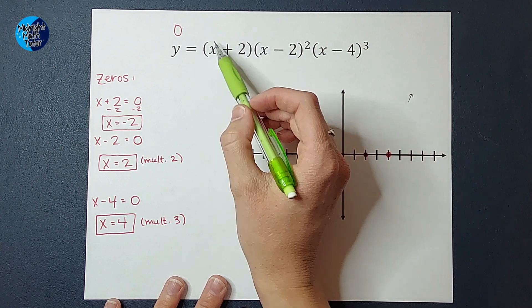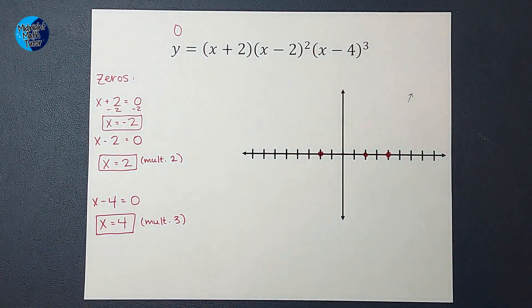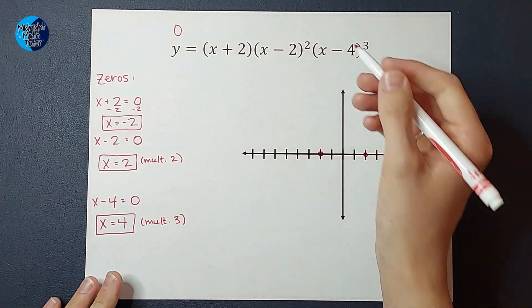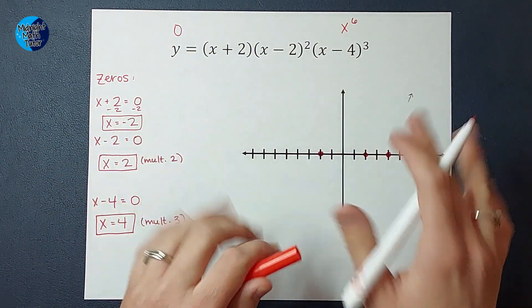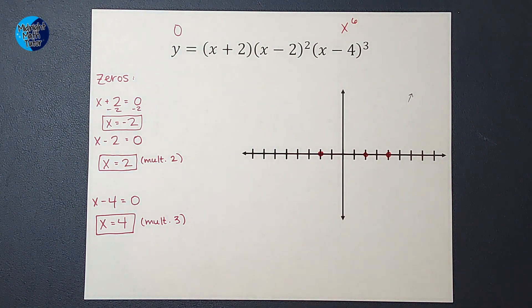So I would end up with x to the sixth once I had this all multiplied out. So my degree, my highest exponent is 6. So I just need to look at if it's even or odd.